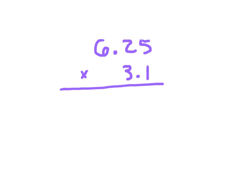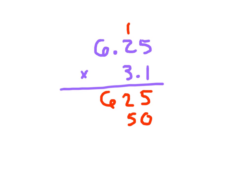We have 6 and 25 hundredths times 3 and 1 tenth. Notice there are two decimal places in the first factor and one decimal place in the second factor. So in the answer, how many decimal places will there be? Right — three. Working the product, we ignore the decimal places: 625 times 1 is 625. For 625 times 3, place a 0 because that 3 is worth 30. 3 times 5 is 15, write 5 and regroup the 1. 3 times 2 is 6, plus 1 is 7. 3 times 6 is 18.